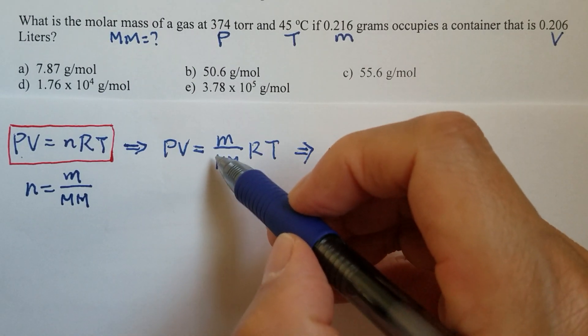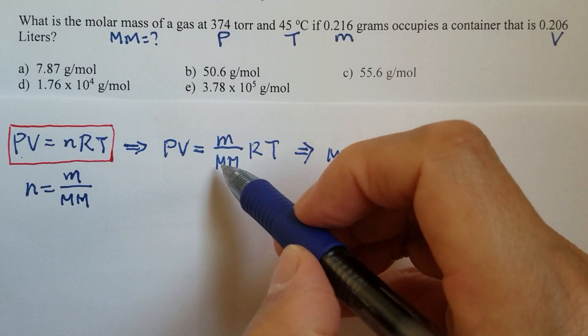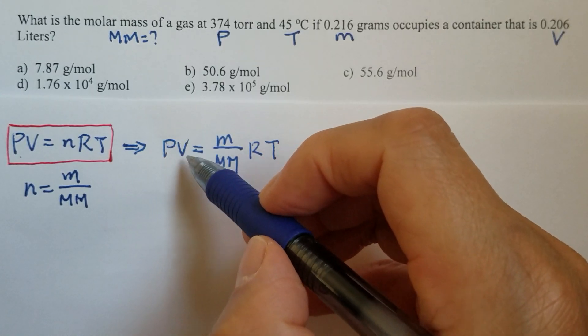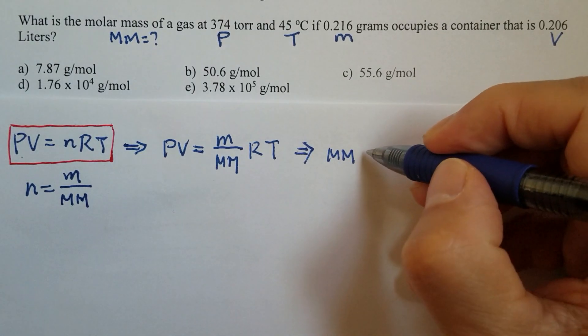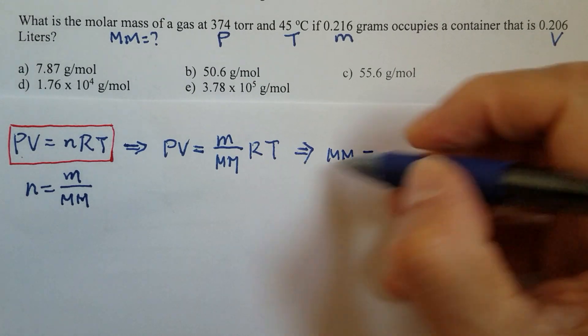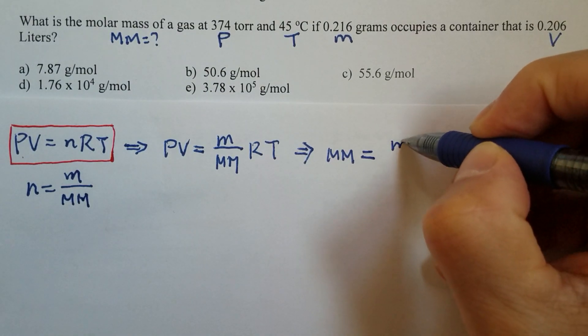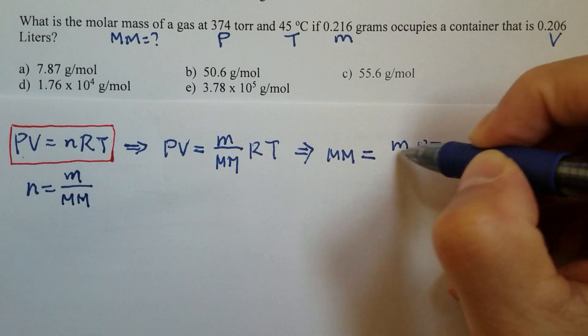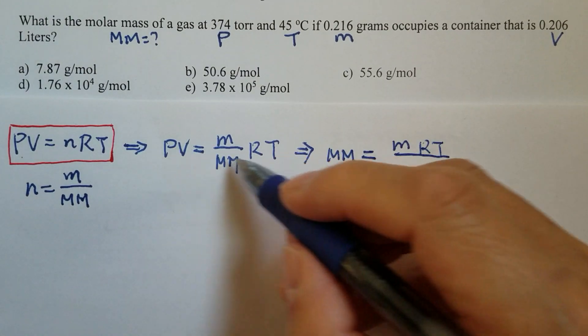If you can see, if we swap molar mass with PV and pull it to the other side, then that will be M times R times T over PV. We swap the position.